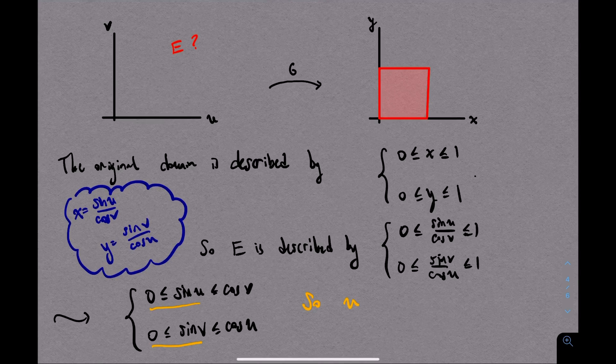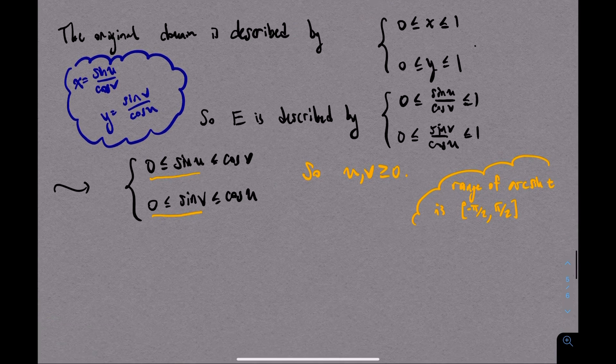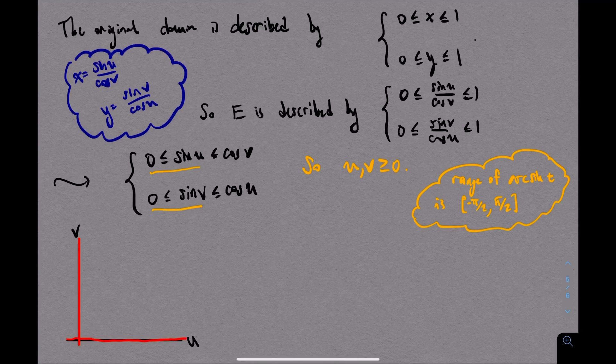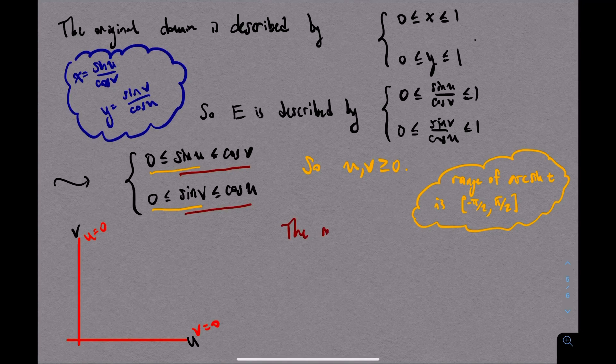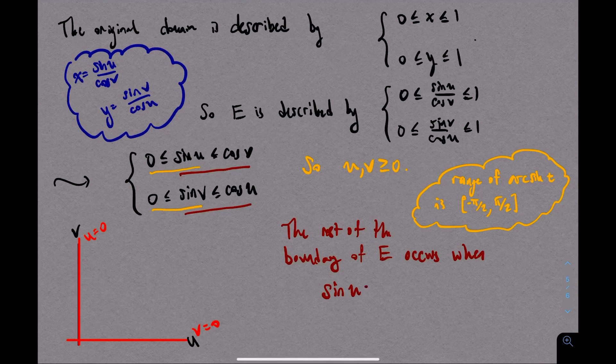So the region we care about is described by sine of u over cosine of v being between 0 and 1, and likewise sine of v over cosine of u being between 0 and 1. Let's multiply through by the cosines in both inequalities. Look at the left-hand side of each inequality first. This tells us that sine of u and sine of v have to be non-negative. Now if you think about the unit circle, this will tell you that u and v have to both be non-negative. On the standard interval from negative pi over 2 to pi over 2, sine is positive from 0 to pi over 2.